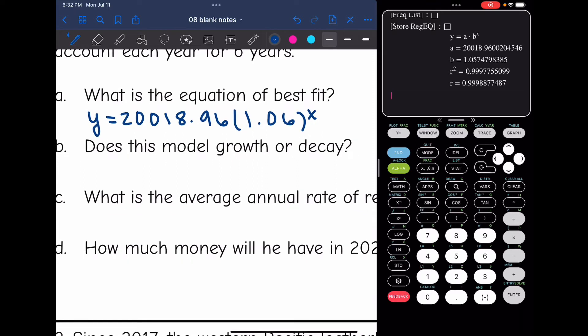And then the next question is, does this model grow or decay? Well, the B value is greater than 1. So this is growth.